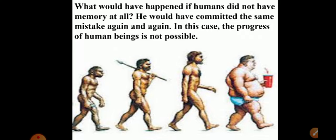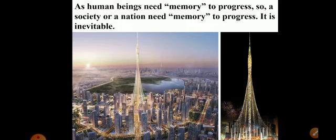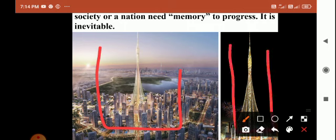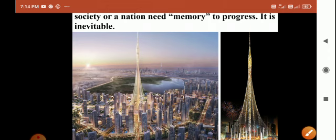What would have happened if humans did not have memory at all? Humans would have committed the same mistake again and again. If humans did not have memory, they would commit the same mistake repeatedly, and in that case, the progress of human beings would not be possible. So, human beings need memory to progress, to develop — memory for development of society, state, and nation. Memory to progress is inevitable. Inevitable which means unavoidable; it is compulsory.